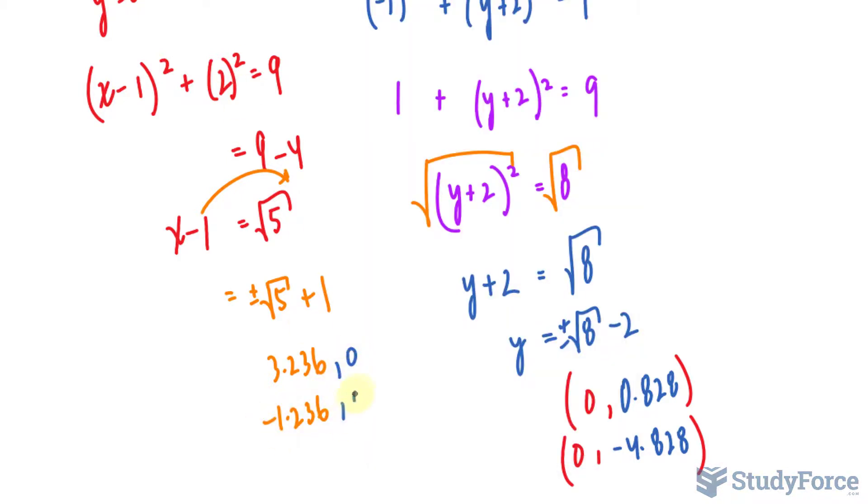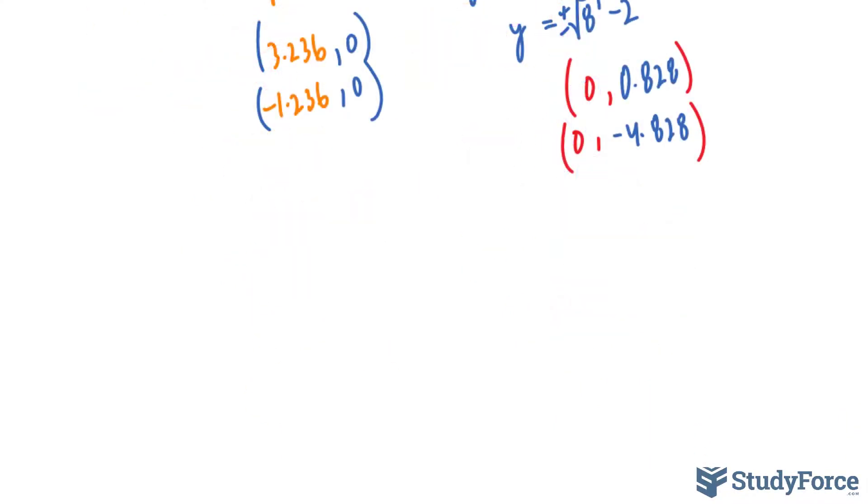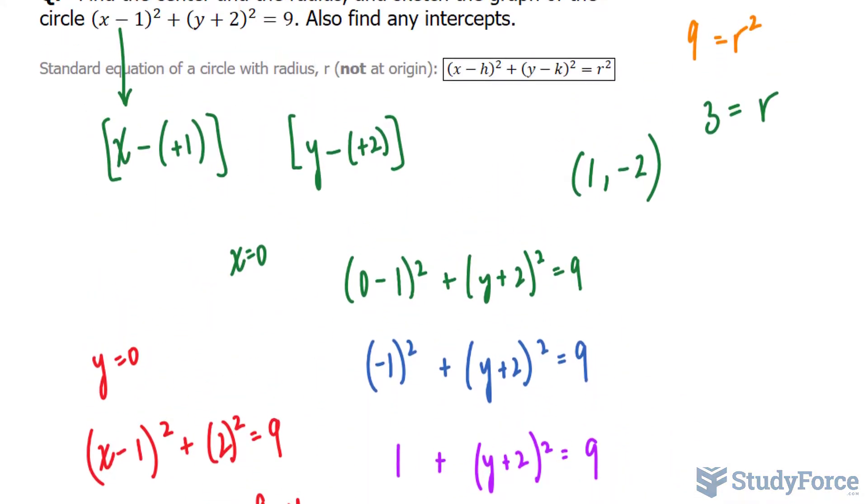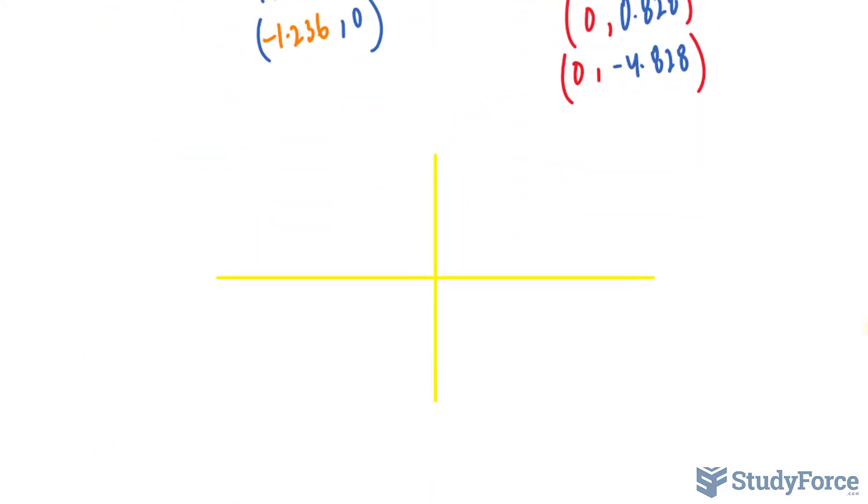So the y's will be 0 and now we can go ahead and plot this. Let's create an xy plane just like that. And we're only sketching here so we're not looking for something that's perfect. We'll start with the center being at 1 and negative 2. Let's say that's 1 and negative 2 is down here. So that's the center represented as C.